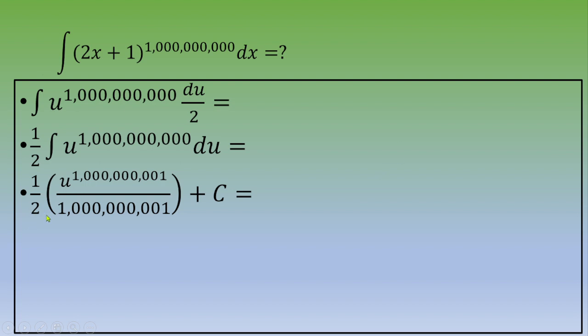Then, the next step is to multiply by 2 in the denominator. And you get u to the power 1 billion and 1, over 2 billion and 2, plus capital C.